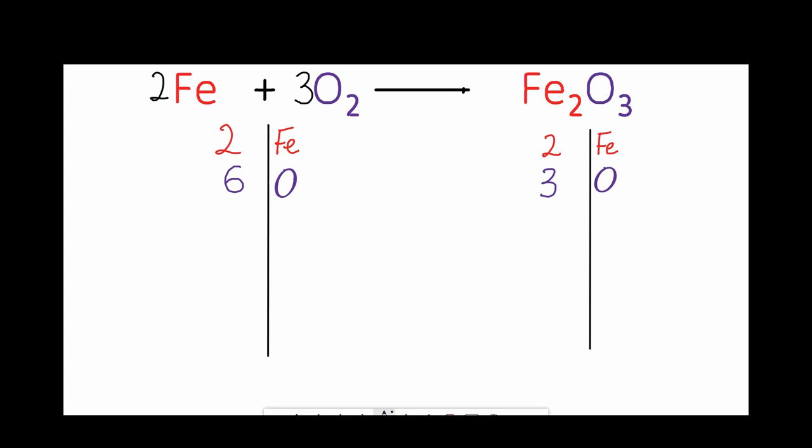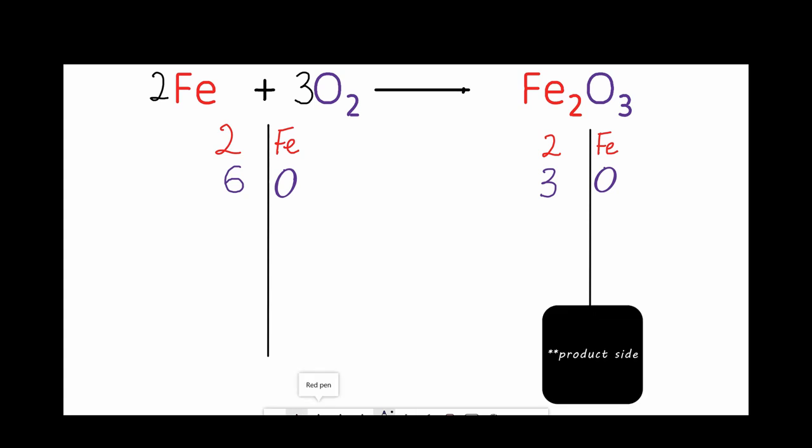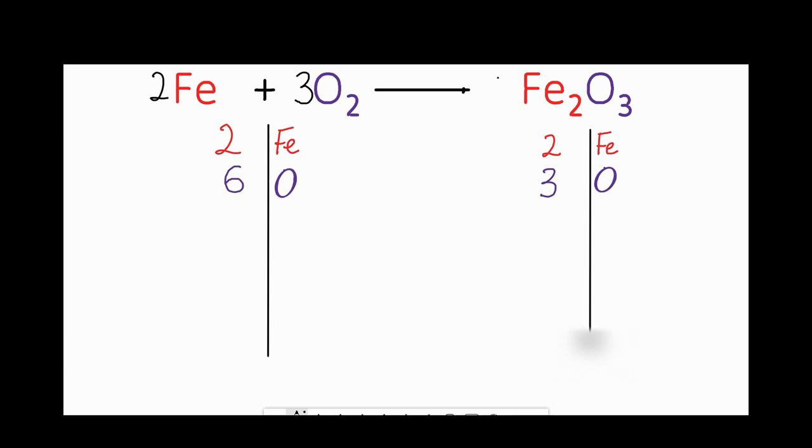And so that changes it so that I have six oxygen atoms on the reactant side. And now I can use my doubling rule, right? So I'm going to double the reactant side now. Note I can't just double the oxygen. I have to double everything that's in the compound with oxygen. So that means that I have four iron atoms on the right and six oxygen atoms on the right.